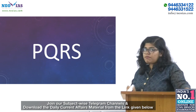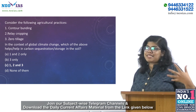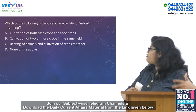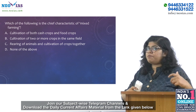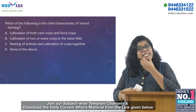Moving to the previous year question revision series — yesterday's question was about which global climate change resilient agricultural type, and the answer is option C: all of the above (1, 2 and 3). Today's question: which of the following is the chief characteristic of mixed farming? Option A: cultivation of both cash crops and food crops. Option B: cultivation of two or more crops in the same field. Option C: rearing of animals and cultivation of crops together. Option D: none of the above. Please give the answer in the comment section below.